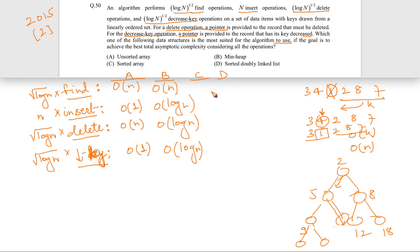For sorted array: find is O(log n) using binary search. Insert takes O(n) because we must find the correct sorted position (like insertion sort) and then shift elements to make room, which in the worst case requires scanning and shifting the entire array.